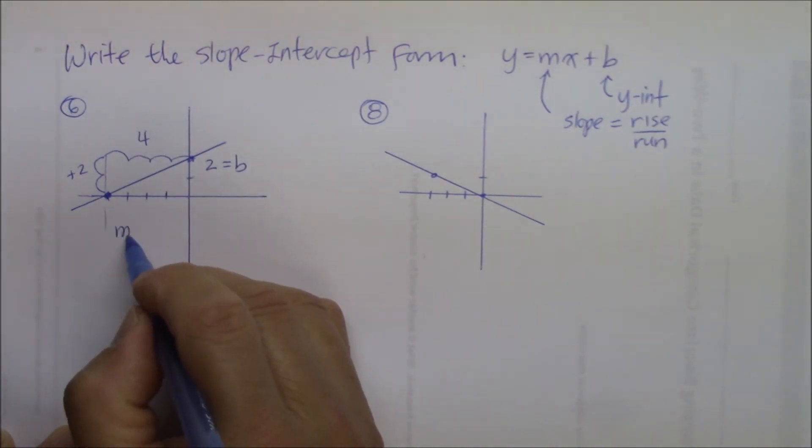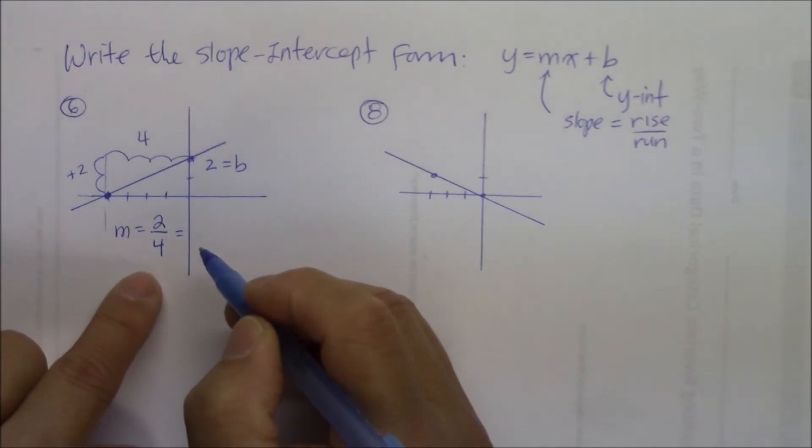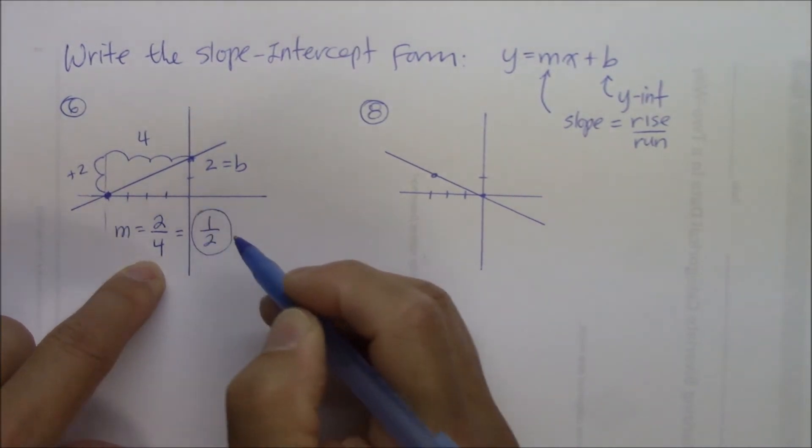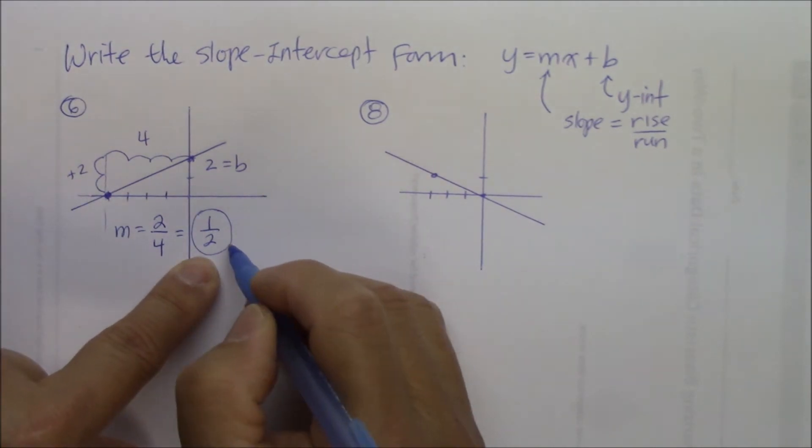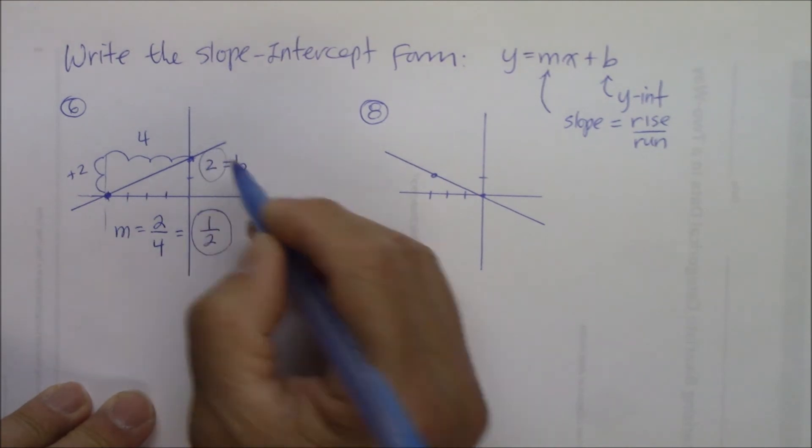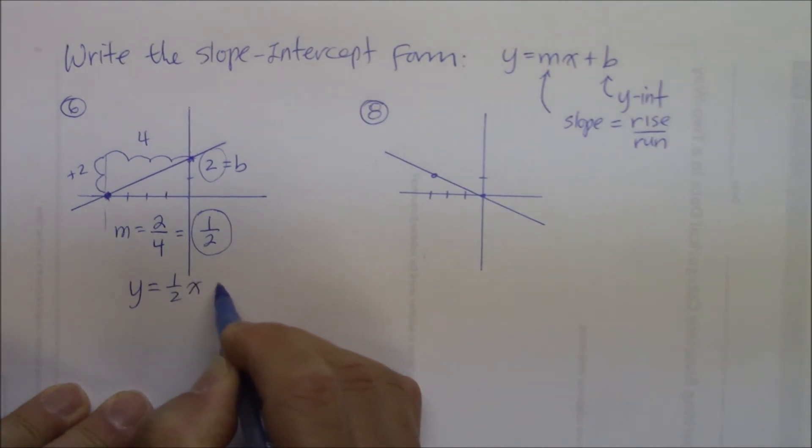So the slope is rise, two, and run, four. But this quotient can be reduced to become one over two, and that is a simplified rise, or the rate of change for this function. So now we have all the information we need to write the slope-intercept form, which is y is equal to one-half x plus two.